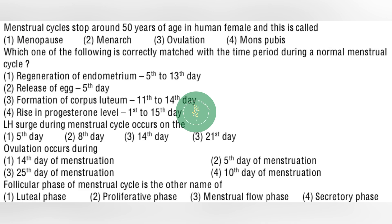Next question: which one of the following is correctly matched with the time period during a normal menstrual cycle? — option number 1: regeneration of endometrium, 5th to 13th day. Next question: LH surge during menstrual cycle occurs on — option number 3: 14th day. Next question: ovulation occurs during — option number 1: 14th day of menstruation. Next question: follicular phase of menstrual cycle is another name of — option number 2: proliferative phase.